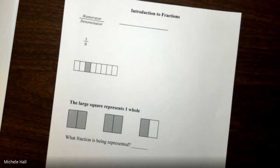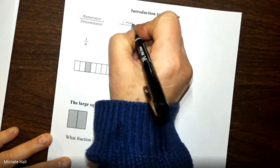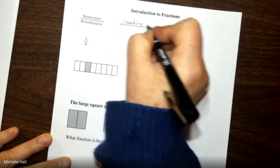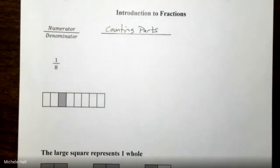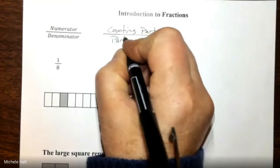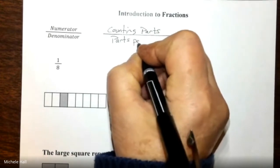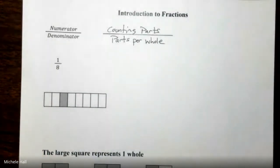Introduction to Fractions. We have the numerator that is about counting parts. And we have the denominator which is about parts per whole. How many parts are there in each one whole? Parts per whole.